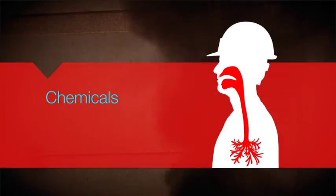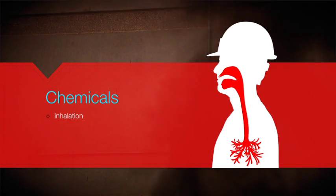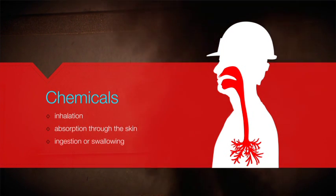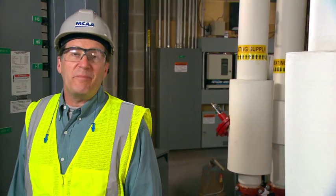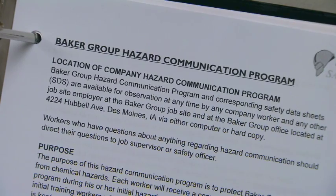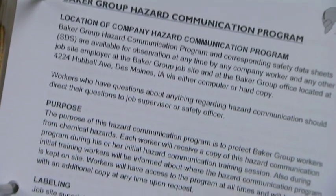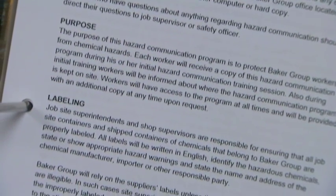Chemicals can get into your body in several ways, such as through inhalation, absorption through the skin, and ingestion or swallowing. Sometimes chemicals can even be injected into your body. Fortunately, we have some rights that help us protect ourselves from chemical hazards. OSHA's hazard communication standard gives us the right to know about the chemical substances we could be exposed to in the workplace and how to protect ourselves from those hazards. The standard requires each company to develop and implement a hazard communication program.